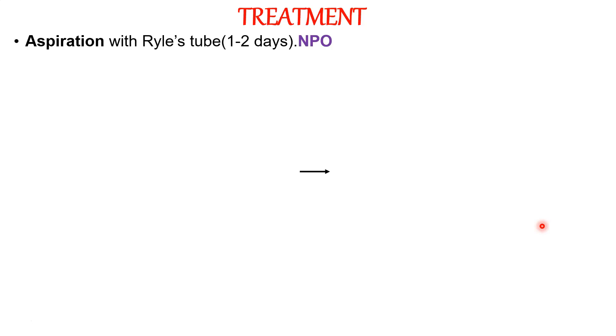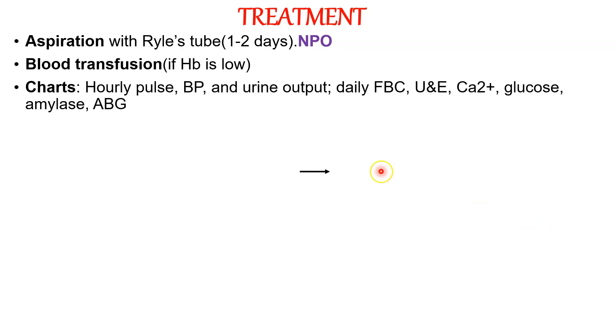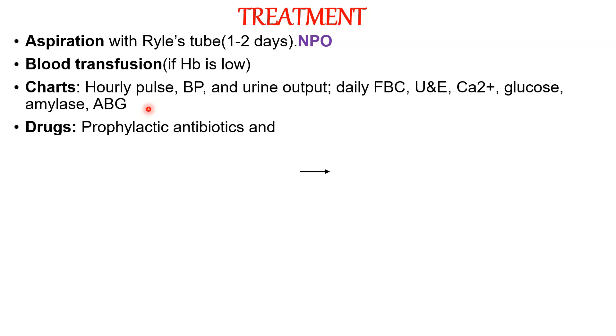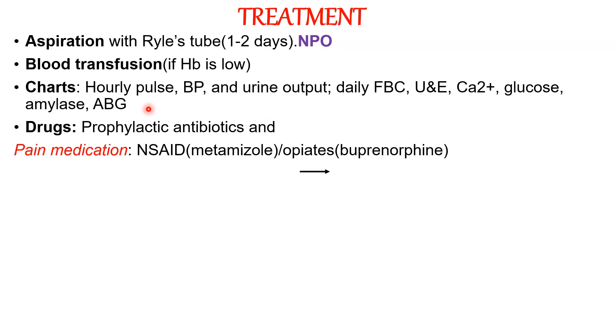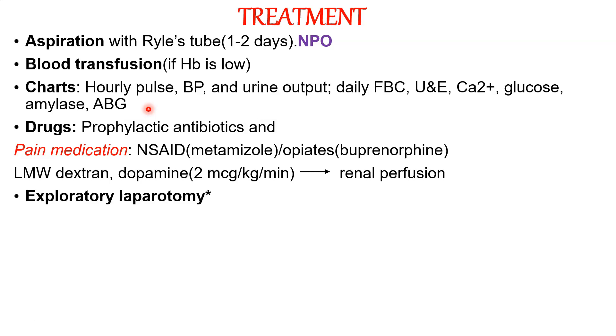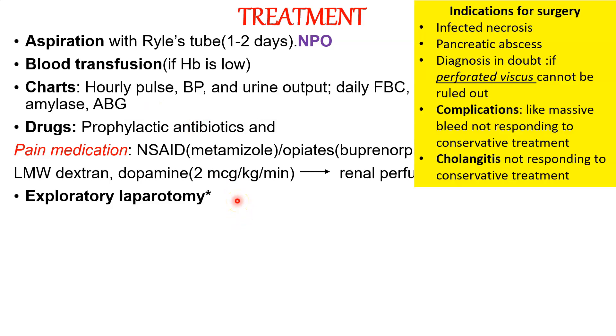In acute pancreatitis we need to manage pain and dehydration. The patient is initially kept nil per oral and nasogastric aspiration is done. Nil per oral is maintained for the first one to two days. If there is low hemoglobin, blood transfusion may be done. Monitoring includes hourly pulse, BP, and urine output, along with daily calcium, glucose, urea, electrolytes, amylase, and ABG. Drugs given include prophylactic antibiotics, NSAIDs or opiates for pain, and dopamine to maintain renal perfusion. Exploratory laparotomy is generally not done now; indications for surgery include infected necrosis, pancreatic abscess, doubtful diagnosis, or complications not responding to conservative treatment.